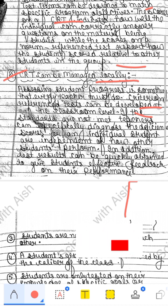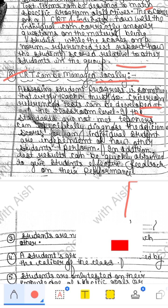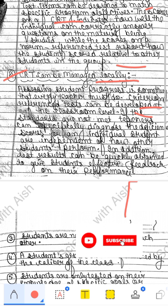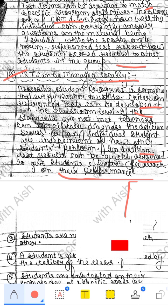The teacher will see why the child is staying behind. The child's achievement depends on two things: environment and heredity. Maybe the child has a hereditary disability in studying and writing, or maybe the environment is causing a problem. The teacher will diagnose these things to see why the child is lagging behind. In addition, test results can be quickly obtained to give students effective feedback on their performance.